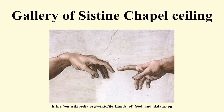Above the windows are a series of spandrels depicting families with young children. The children may represent particular children mentioned in the Bible, such as Isaac and Samuel. The composition of many of the pictures is similar to that found in depictions of the Holy Family resting on the flight into Egypt.